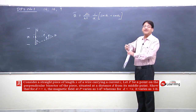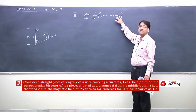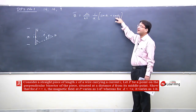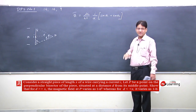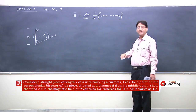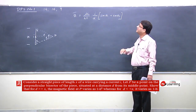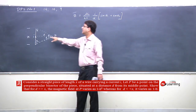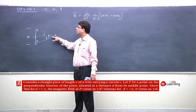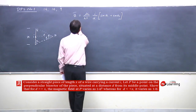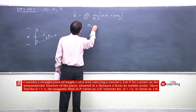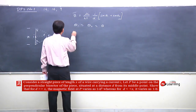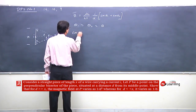When the wire is of infinite length, theta₁ and theta₂ approach zero, so cos θ₁ and cos θ₂ both become 1, giving B = 2I/d. For a finite length wire, since point P lies on the perpendicular bisector, theta₁ equals theta₂, so both equal some angle theta.